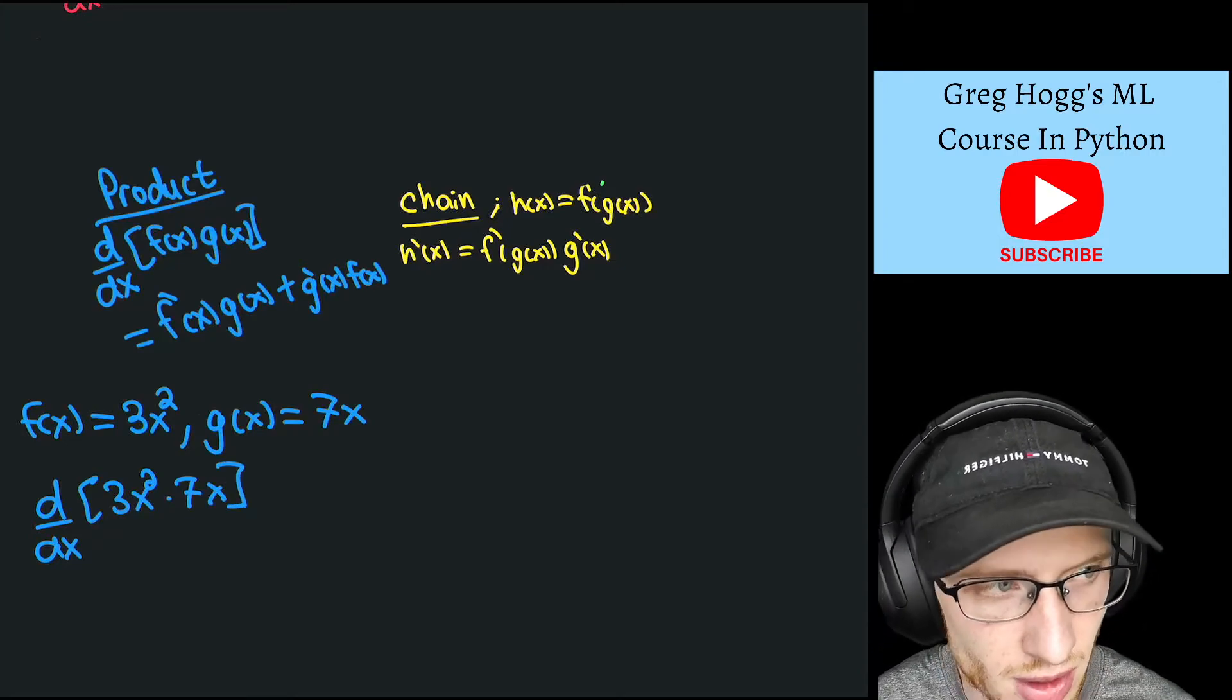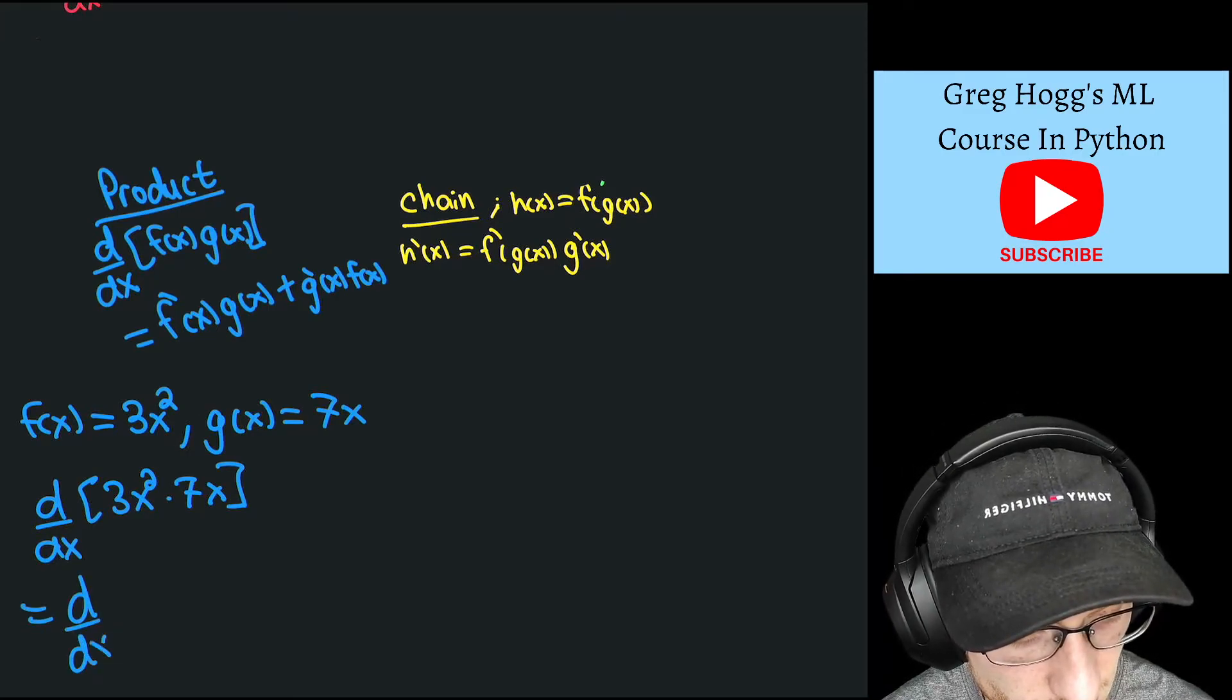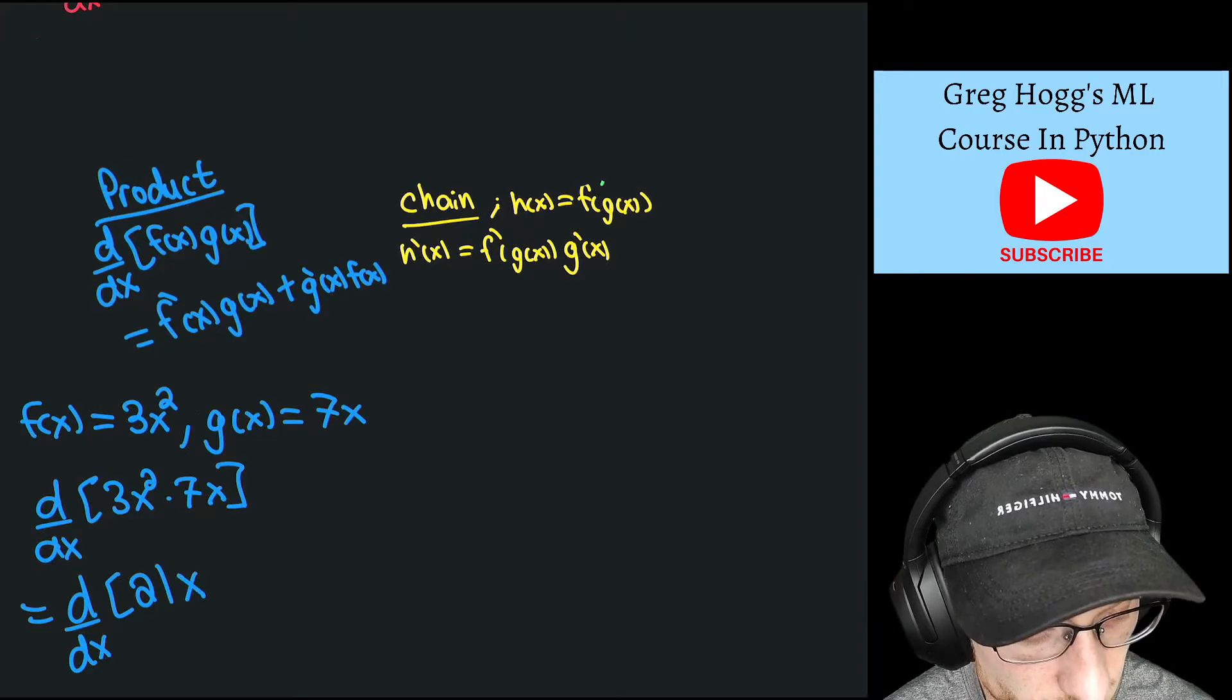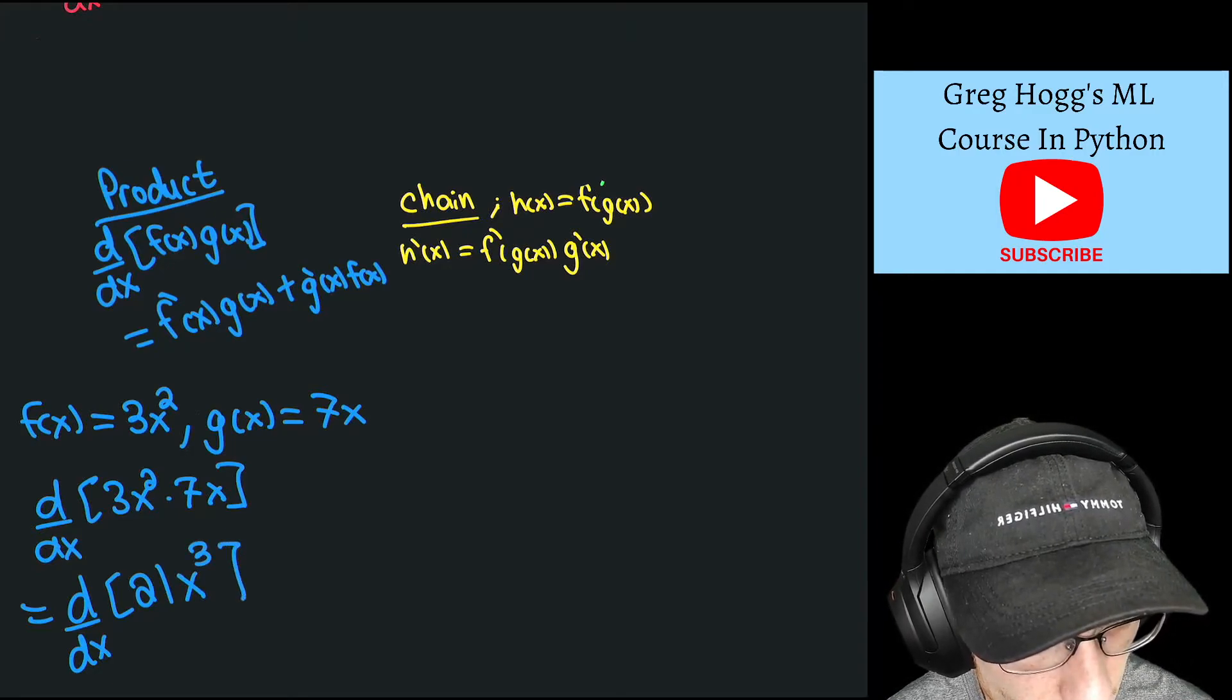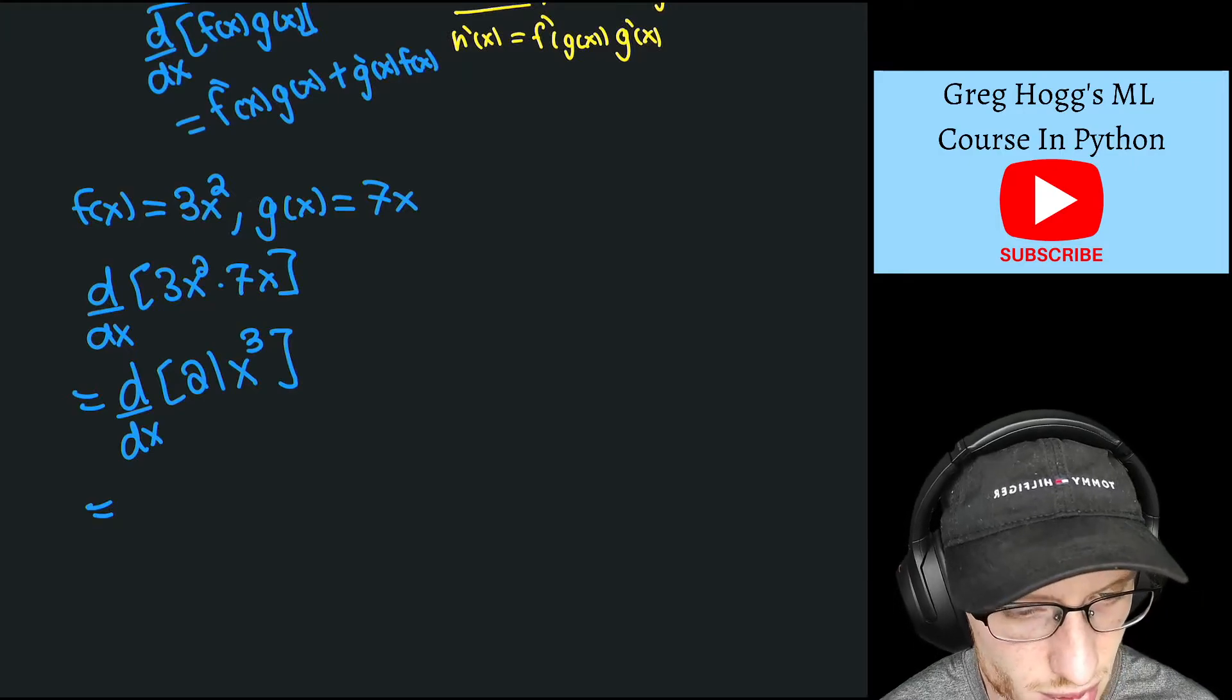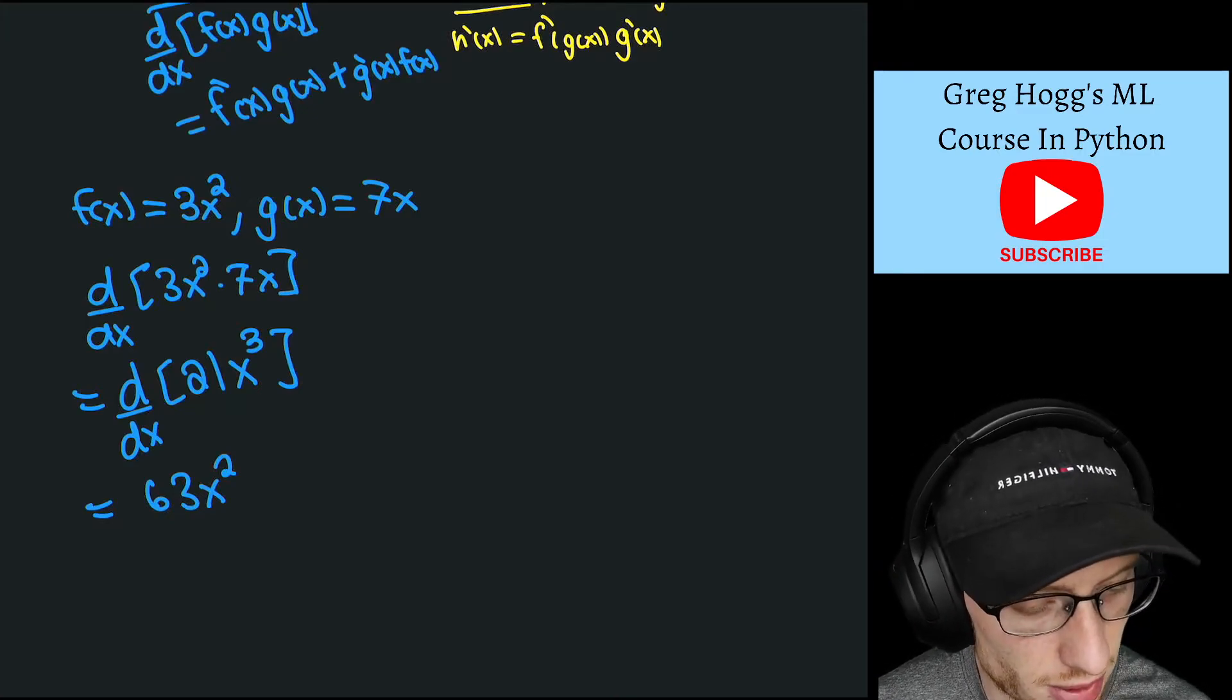Well, quite simply, we could ignore the product rule altogether, and we could just calculate this by simplifying as d/dx of multiply the numbers together, we get 21, multiply the x's together, we get x squared times x is x to the 3 now. And so now, you can just do this derivative as 3 times 21 is 63x squared, and then you're done, right?